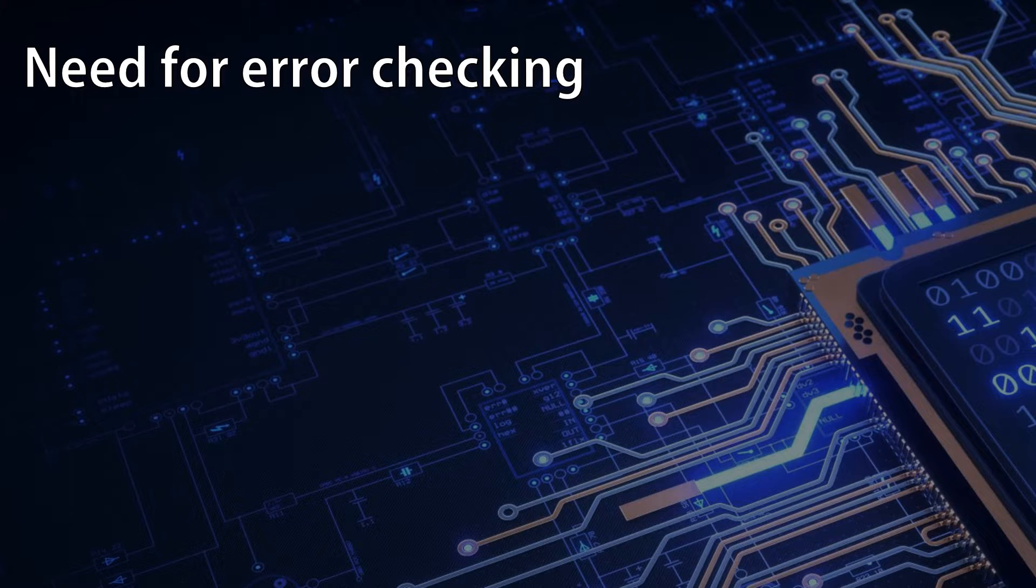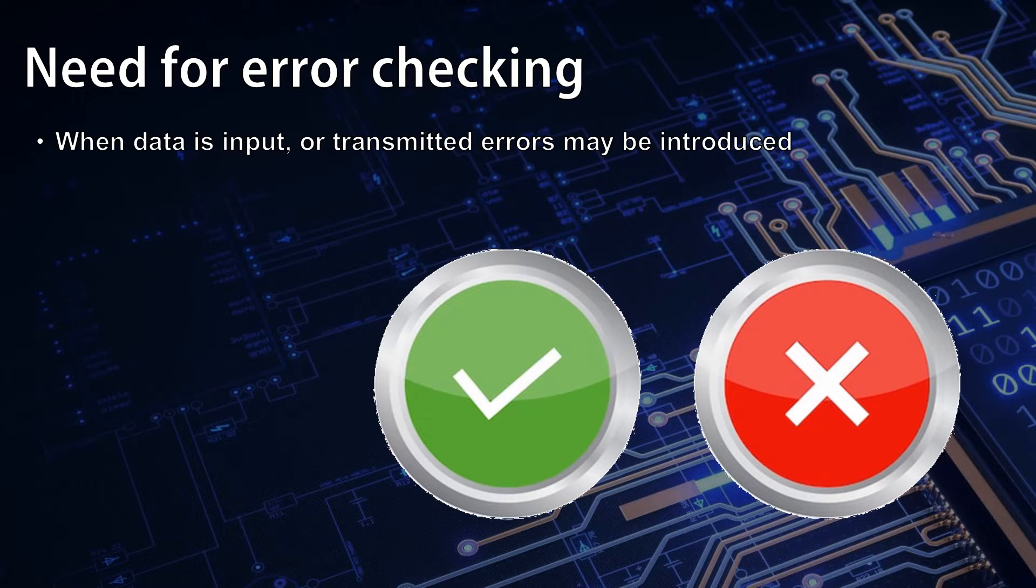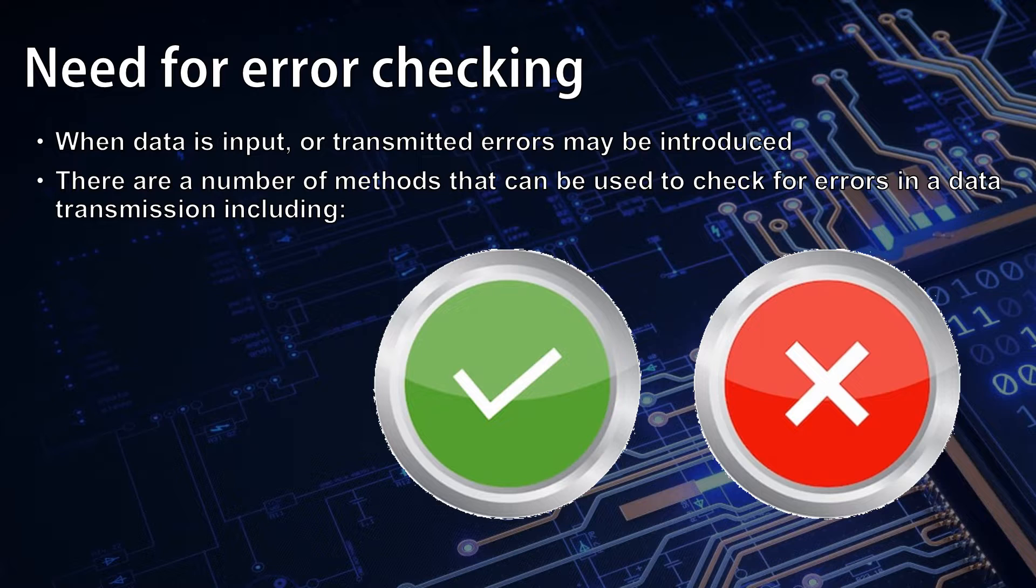When data is input or transmitted, errors may be introduced. There are a number of methods that we can use to check for errors in a data transmission. These include parity bits, majority voting, checksums, and check digits.